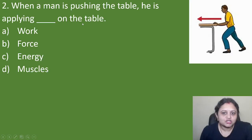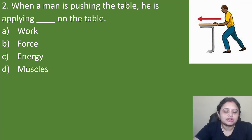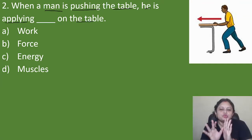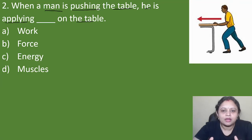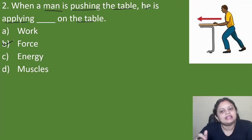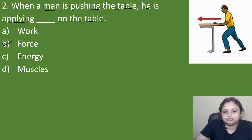Coming to the next question: when a man is pushing the table, he is applying dash on the table. Option A: work, B: force, C: energy, D: muscles. When we push something, what we apply on that body — we apply force. So the correct answer is option B, that is force.